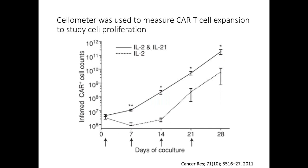This is a publication from Cancer Research where the cellometer Auto T4 was used to measure CAR T cell expansion. The graph shows a co-culture of CAR T cells with K562 supplemented with IL-2 or IL-21. They wanted to see differences in cell proliferation with different stimulators in the media. As shown, the IL-2 and IL-21 combination allowed more CAR T cells to grow over a 28-day culture.